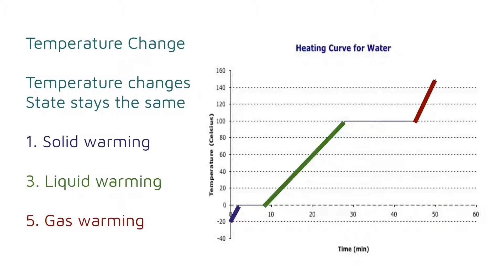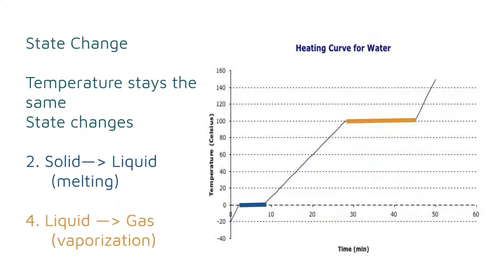The added heat is increasing the temperature of the substance. The state change sections of the graph are a little different — the temperature will not change, but the substance's state will. It will either melt as it goes from a solid to a liquid, or boil as it changes from a liquid to a gas. The added heat is being used to break the substance's intermolecular forces and change the state of matter, so you will not see a temperature increase.